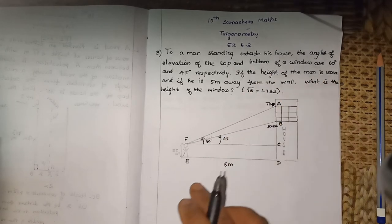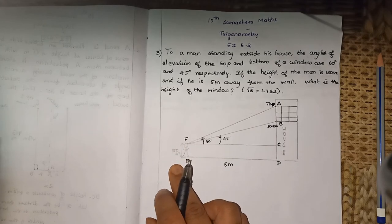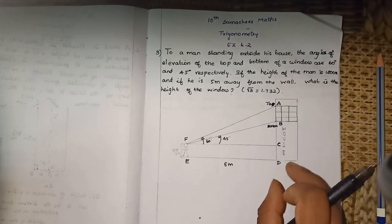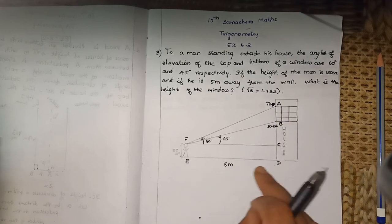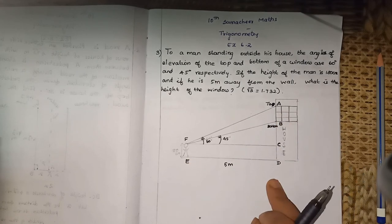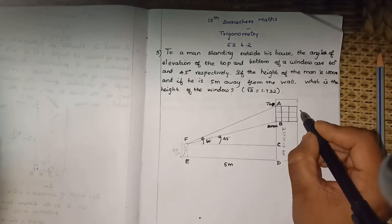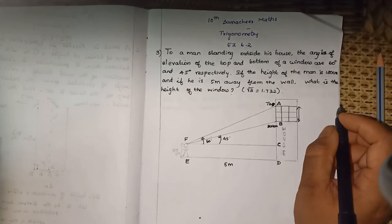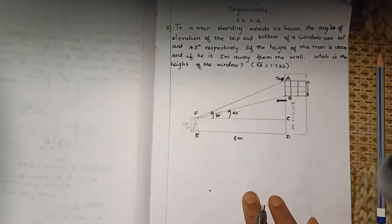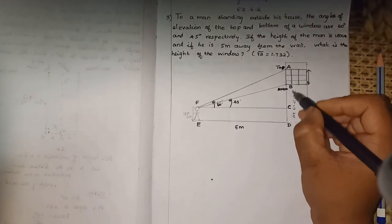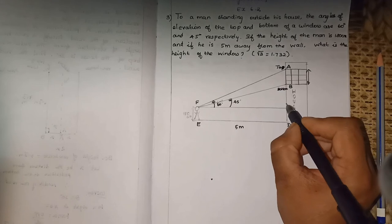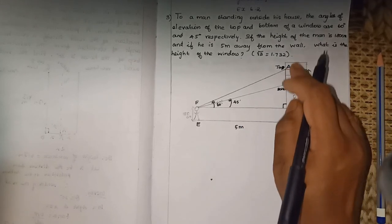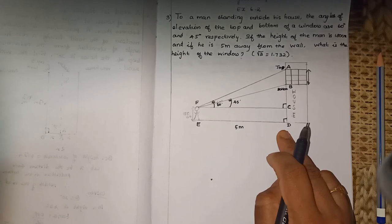If the height of the man is 180 cm and he is 5 meters away from the wall, find the height of the window. First draw the diagram, then we will have triangles. This is the ground, building - perpendicular.